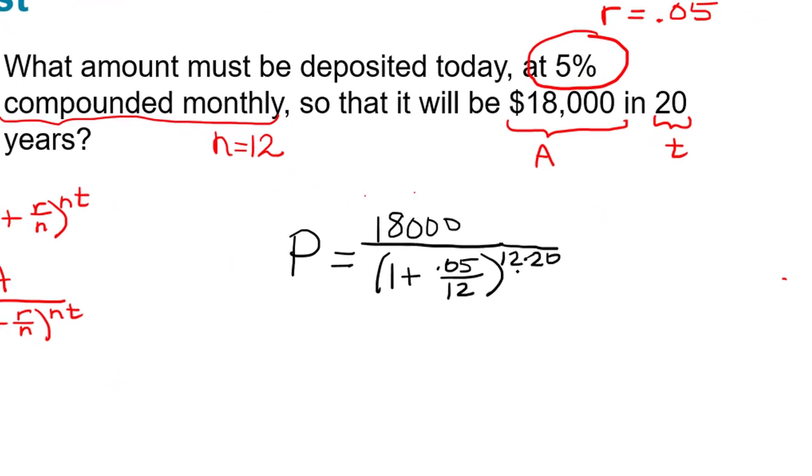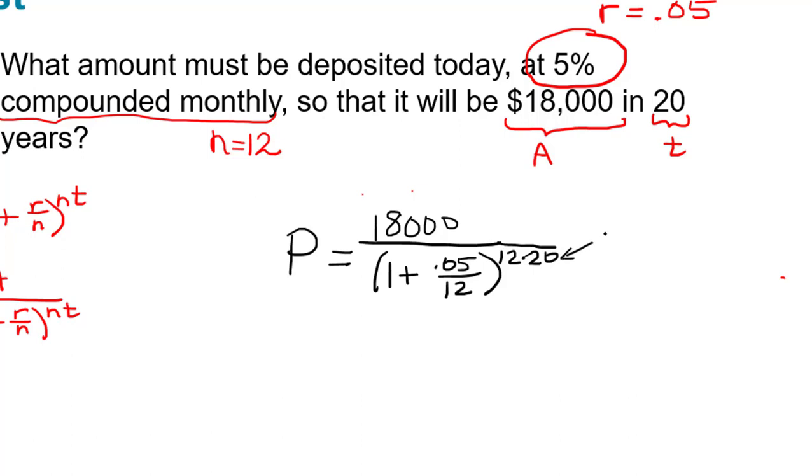So for example, 12 times 20, we can do that. 12 times 20 is 240. I don't have to round off, that's an exact amount.